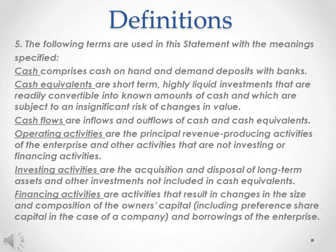Definitions, Para 5: Cash comprises cash on hand and demand deposits with banks. Cash equivalents are short-term, highly liquid investments that are readily convertible into known amounts of cash and which are subject to an insignificant risk of changes in value. Cash flows are inflows and outflows of cash and cash equivalents. Operating activities are the principal revenue-producing activities of the enterprise and other activities that are not investing or financing activities. Investing activities are the acquisition and disposal of long-term assets and other investments not included in cash equivalents. Financing activities are activities that result in changes in the size and composition of the owner's capital, including preference share capital in the case of a company, and borrowings of the enterprise.